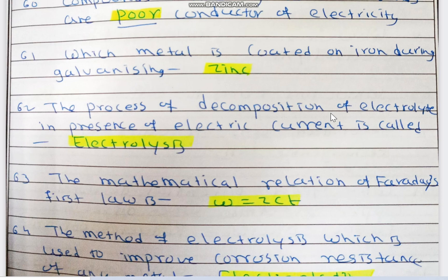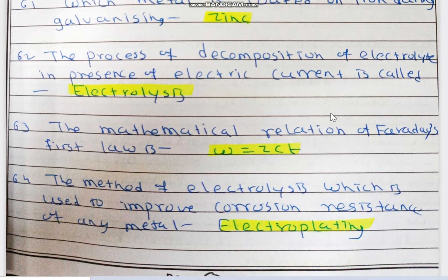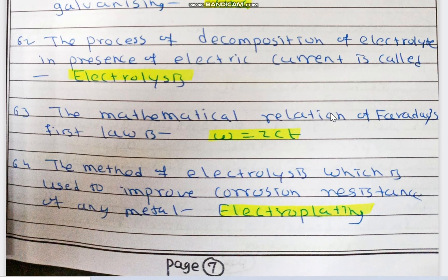Which metal is coated on iron during galvanizing? Zinc is coated on iron during galvanizing. The process of decomposition of electrolyte in the presence of electric current is known as electrolysis — decomposition means breaking up of the substance.